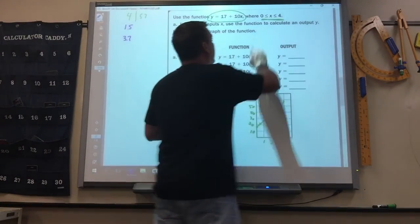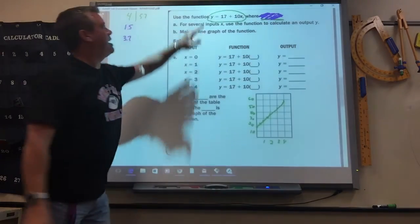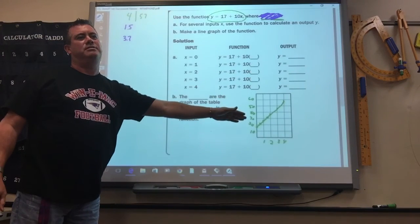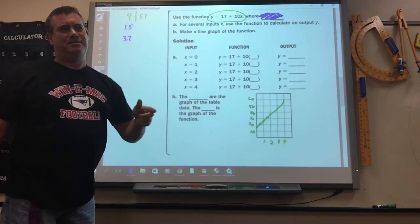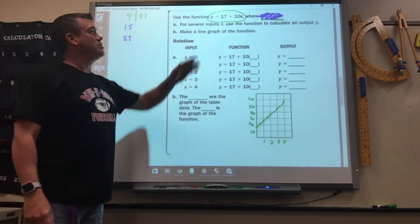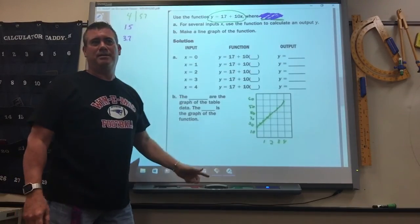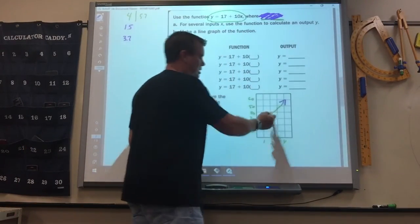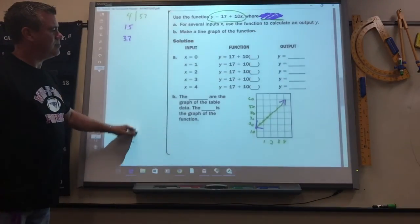Now, if they didn't have this constraint on there and just told you to graph that, do you know what you'd have to do to this graph right here? Close. That means it doesn't start at zero and end at four, so what do you got to do to this to show that? Put arrows. You got to put an arrow to show that it keeps going and an arrow here to show that it keeps going. Okay.